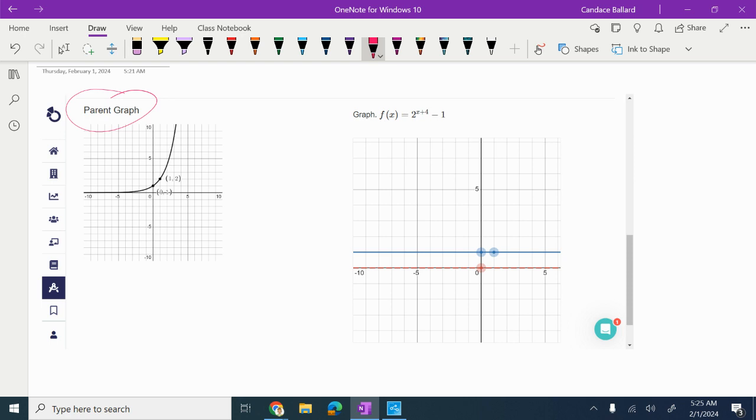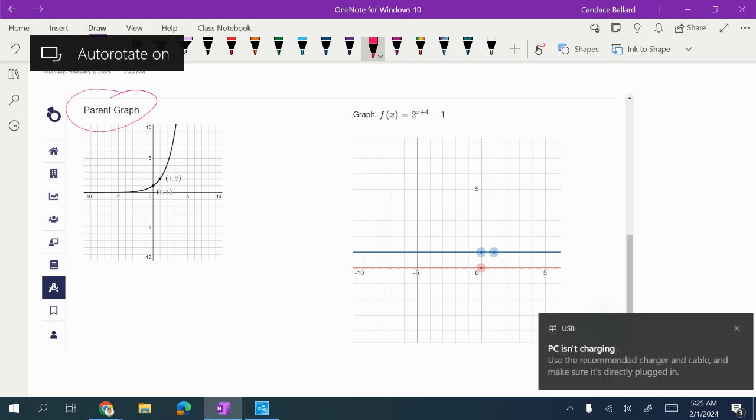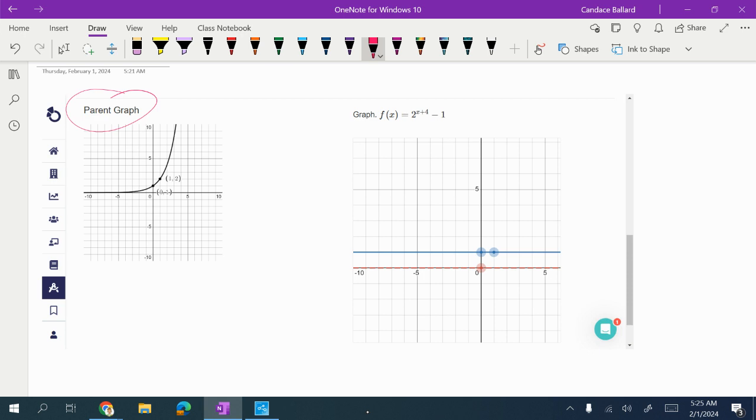I always look for the movement in the problem or how it's supposed to be moving. So this one here, remember this x and y are the left and right movement. And remember, we always change the sign. So that means I'm going to move negative 4 or to the left 4.